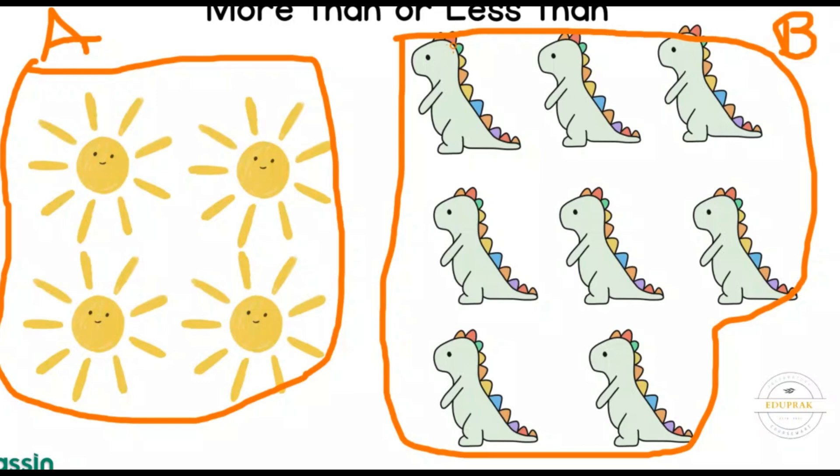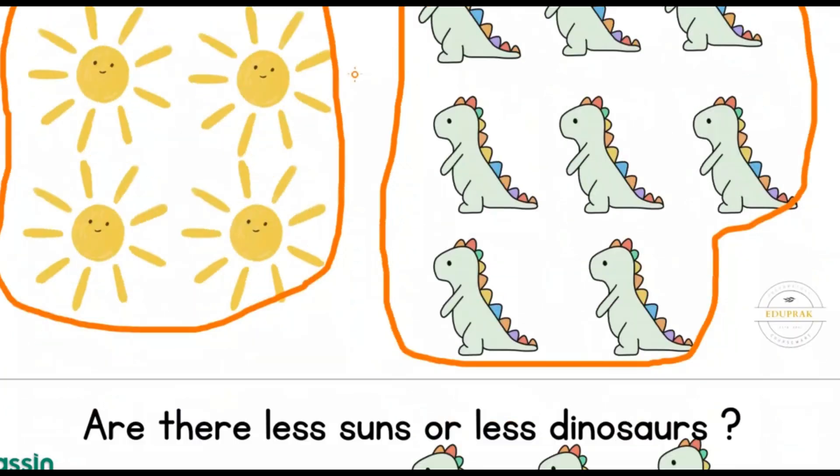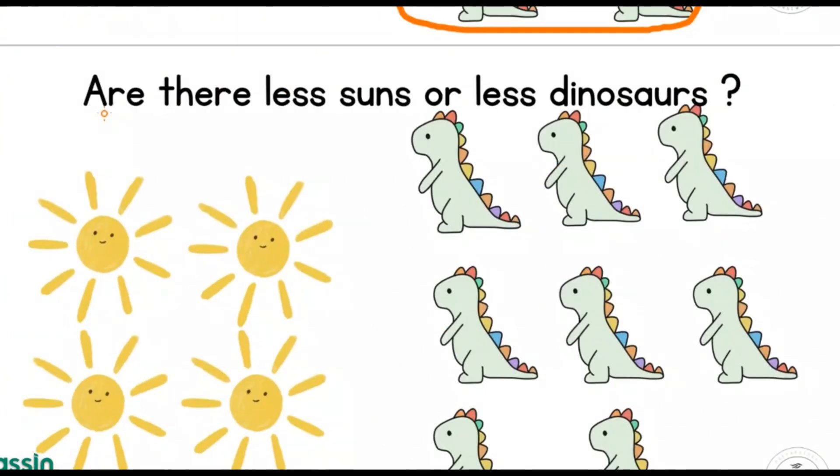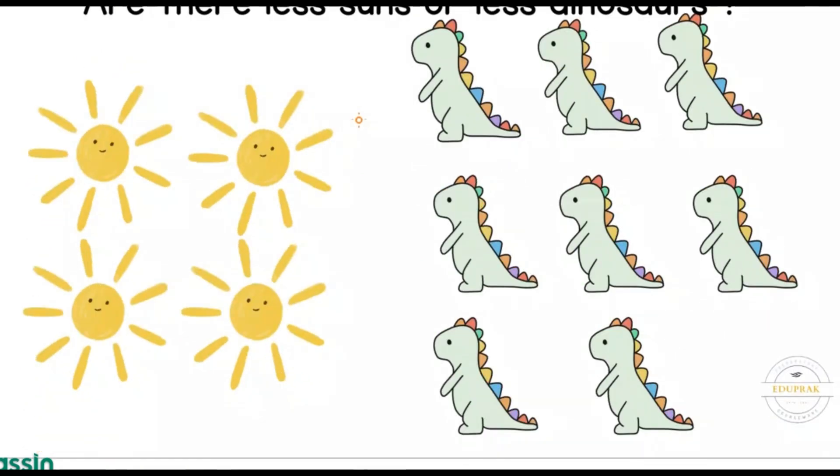Which group is less than? Which group has fewer than the other? Let's check. Are there less suns or less dinosaurs? Great job, very well done! There are less suns. This means that there are fewer suns than there are dinosaurs.